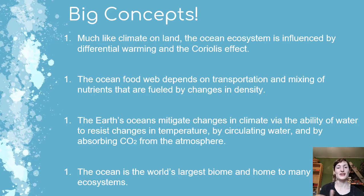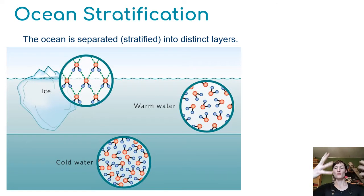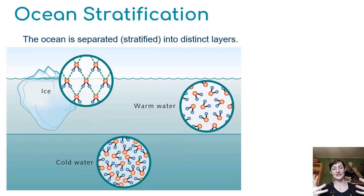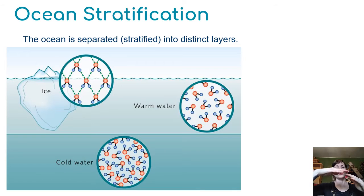Ocean stratification: the ocean is separated into distinct layers, which we can look at based on salt content and temperature. Warm water has molecules moving around more quickly — that's what warmth is, faster movement of molecules. Moving more quickly, they're farther apart, making them less dense. As they cool and slow down, they get closer together, so colder water has more molecules per unit volume and is more dense. Warm water rises to the top and cold water sinks to the bottom, producing stratification.